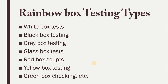Gray box testing is the combination of both white box testing and black box testing. Glass box testing is another name for white box testing, which is essentially unit testing performed by the development team. We also have red box testing, yellow box testing, and green box testing — these are the different techniques we will cover in this tutorial.